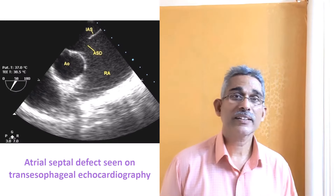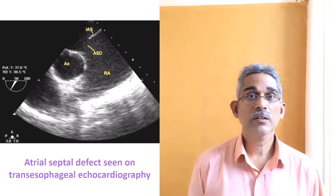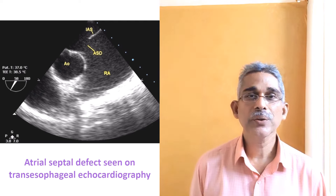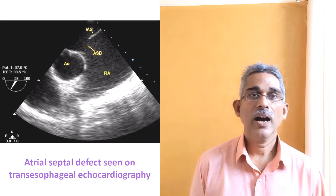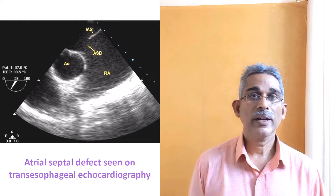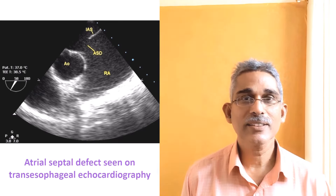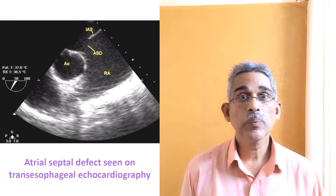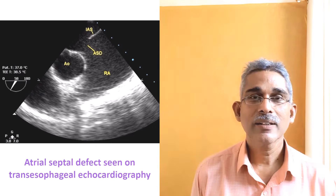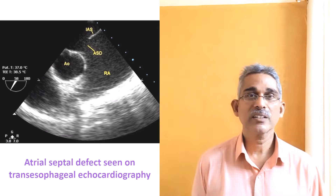So far we have discussed transthoracic echocardiography with the probe kept on the chest wall. There is also transesophageal echocardiography, in which a probe is introduced into the esophagus — it is at the tip of an esophagoscope-like device. You can image the heart from behind, and the advantage is that the lung does not overlap the heart. It is also easier to image posterior structures, and because the heart is nearer to the probe, you can use higher-frequency transducers.